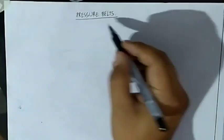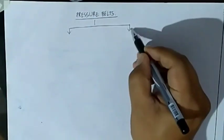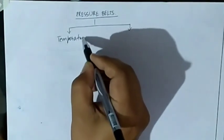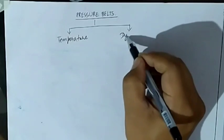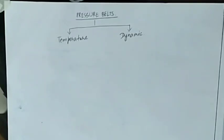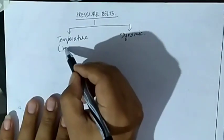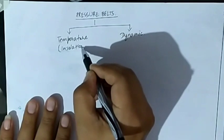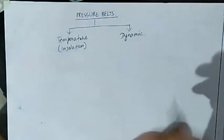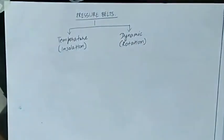Now pressure belts have broadly been categorized into two types. One is the pressure belts formed due to temperature and differences in temperature, and another one is the pressure belts which have been formed due to dynamic regions. The reason behind the temperature-based pressure belts is the insolation — the heat we receive from the sun — and the reason behind the dynamic pressure belts is the rotation of the earth.